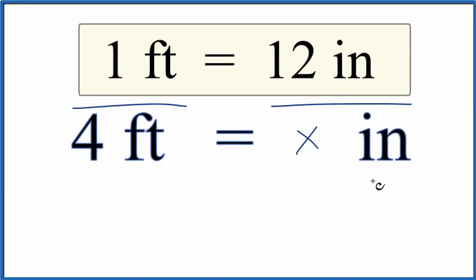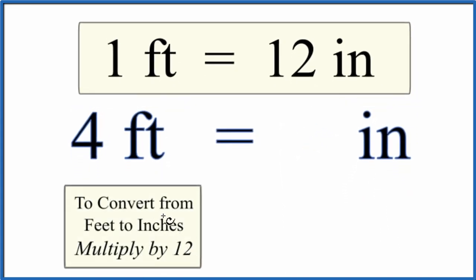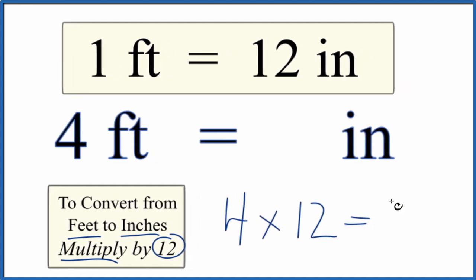Let's look at one final way to do this. You could just memorize that when you convert from feet to inches, you multiply by 12. So we take 4, we multiply that by 12. 4 times 12 is 48. So 4 feet is 48 inches. That's what we found before.